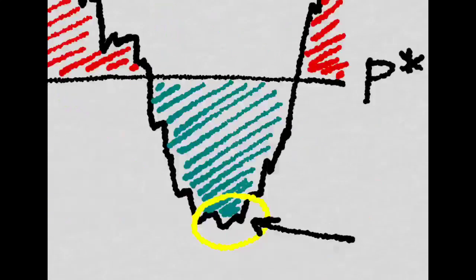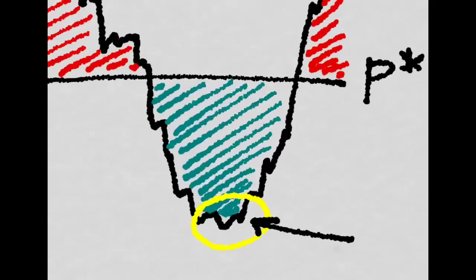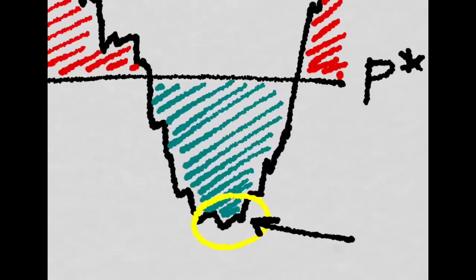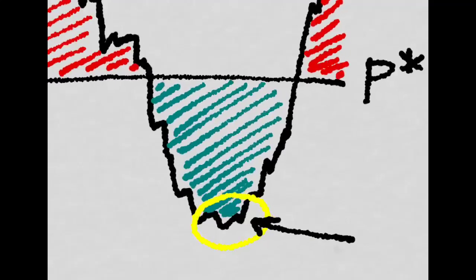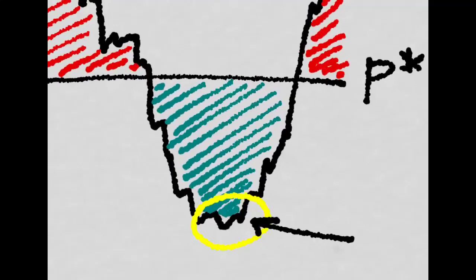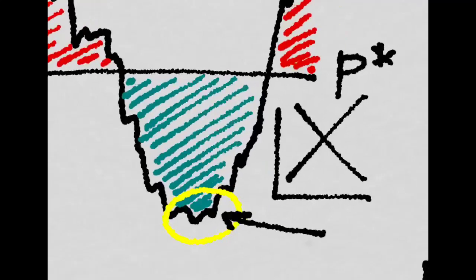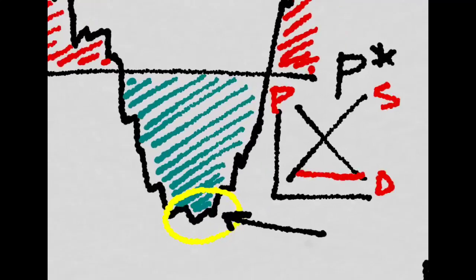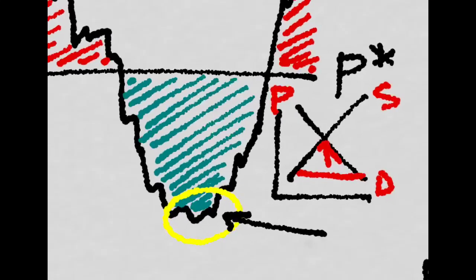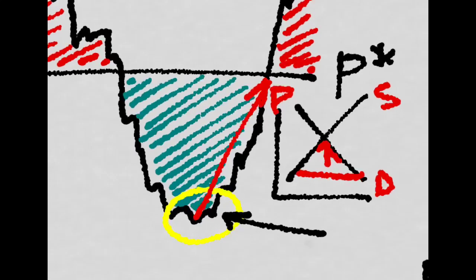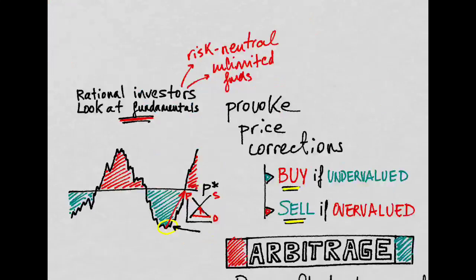Now think of the opposite case: the price is under the fundamental value, and we can say that the stock is undervalued. In this case, the rational investors would start buying the stock because they think the price will have to go up. If there are a lot of buyers in the market, that means there is an excess demand for the stock — and thus the price will have to go up to equilibrium, to the point where the price equals its fundamental value. These price corrections provoked by rational investors — who buy when they think the stock is undervalued and sell when they think it's overvalued — are known as arbitrage.